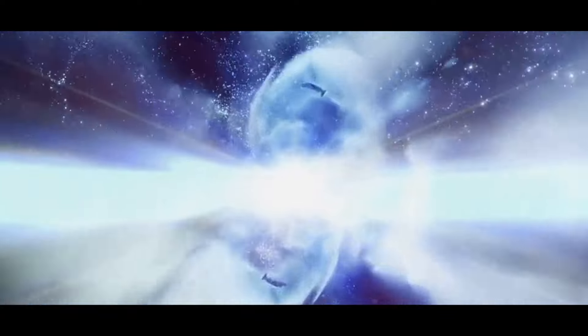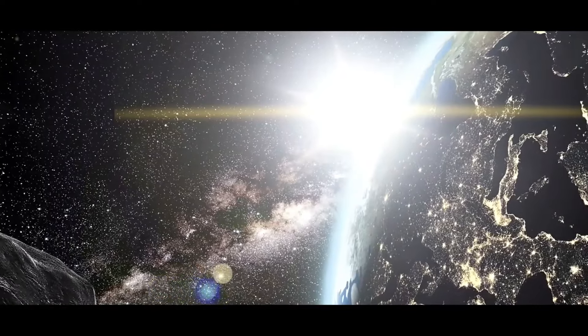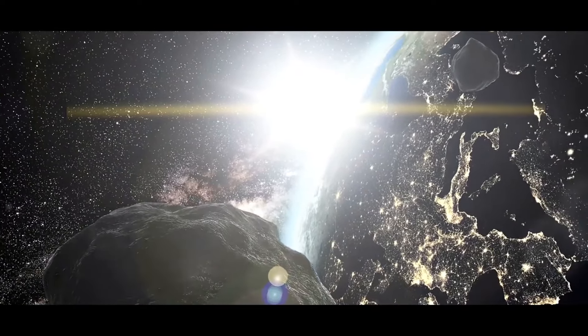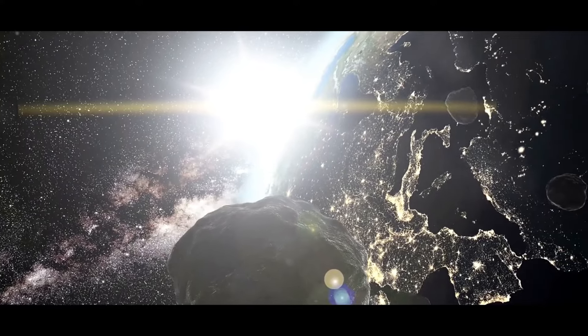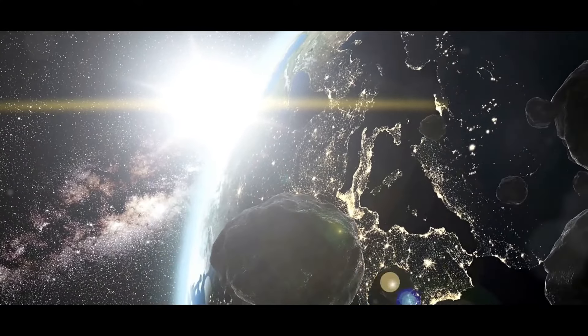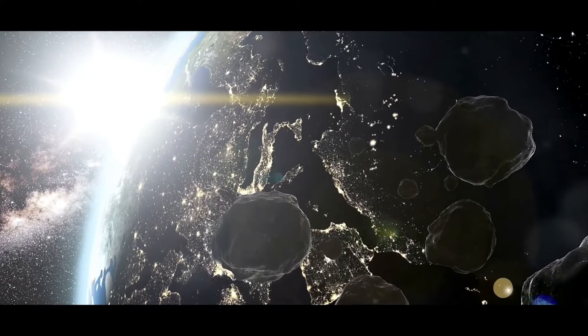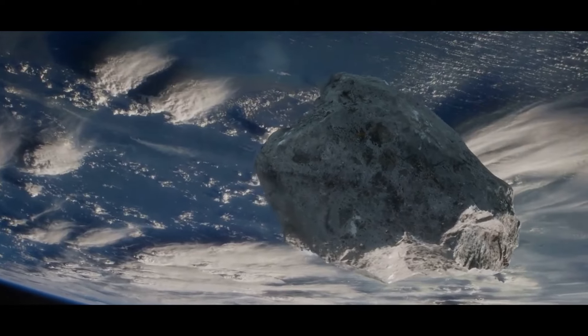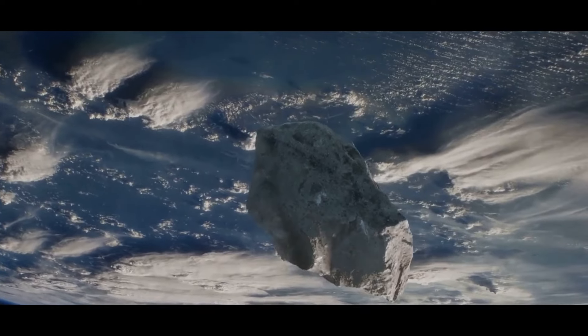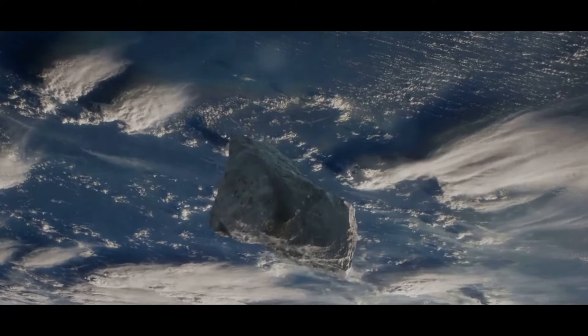A single gamma-ray burst can release as much energy in a few seconds as the Sun will emit over its entire 10 billion year lifetime. If one of these bursts were directed towards Earth and hit our atmosphere, it could potentially trigger a mass extinction by stripping away the ozone layer, exposing the surface to deadly ultraviolet radiation. Luckily, these cosmic death rays are rare and usually directed away from us.